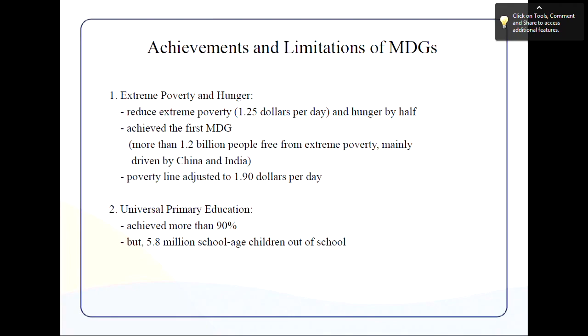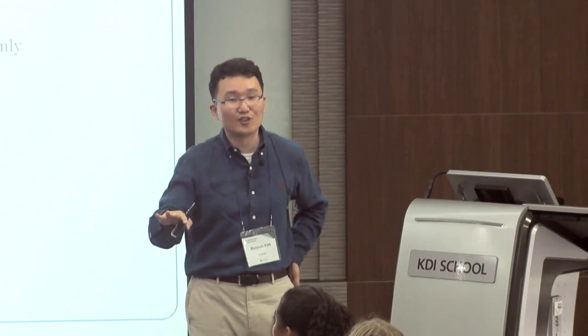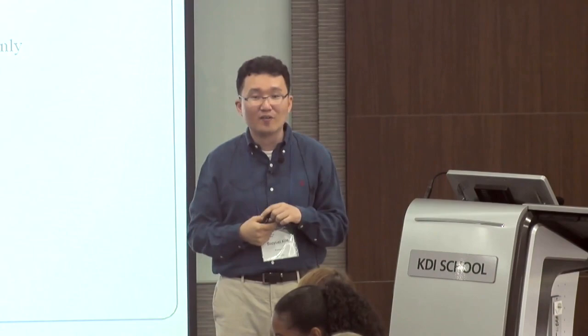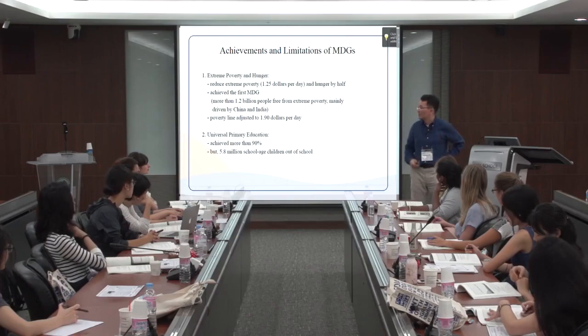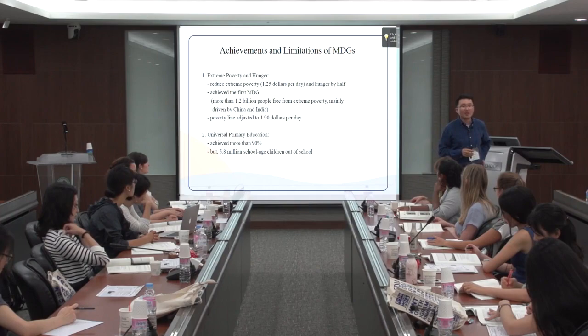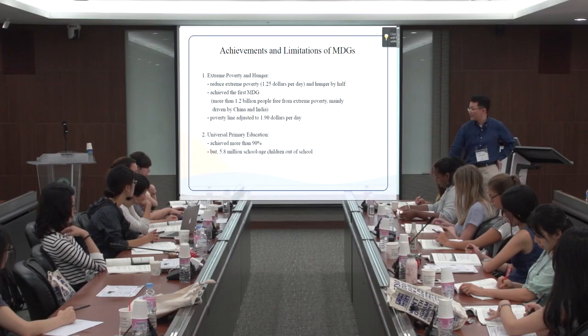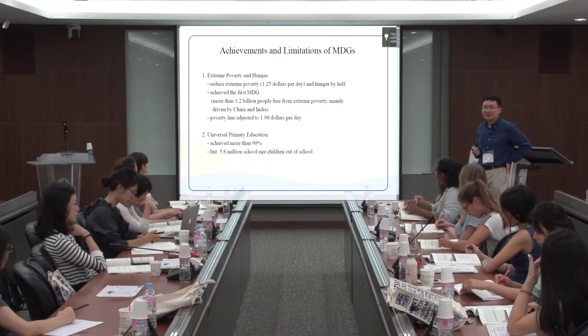MDG number two is universal primary education. For those gathered as world leaders, the global challenge was simply getting children into primary school. We achieved over 90% primary enrollment, but the remaining 10% still means about 5.8 million children out of school. MDG number two was about achieving universal primary education at the basic level.